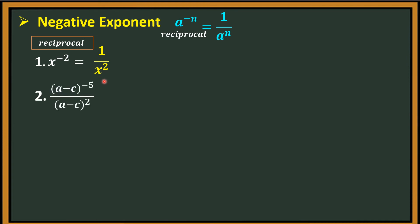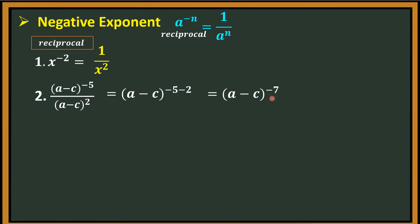Number 2: quantity a minus c, quantity raised to negative 5, over quantity a minus c, quantity squared. Same base, so apply the quotient rule — copy and subtract the exponents. That is quantity a minus c, quantity raised to negative 5 minus 2, which gives quantity a minus c raised to negative 7. Since the exponent is negative, get the reciprocal. That is 1 over quantity a minus c, quantity raised to the 7th power.